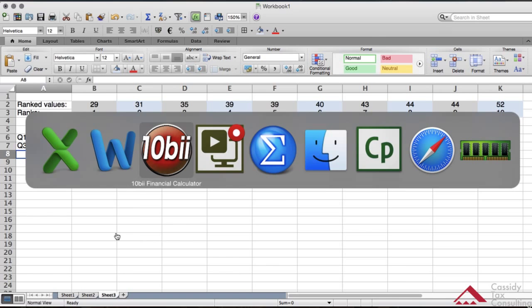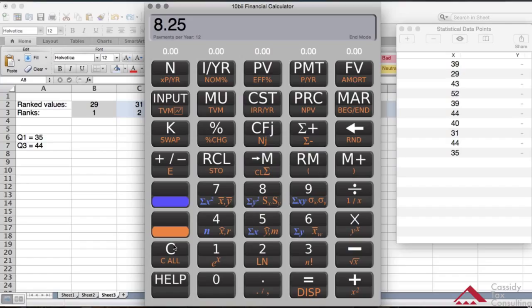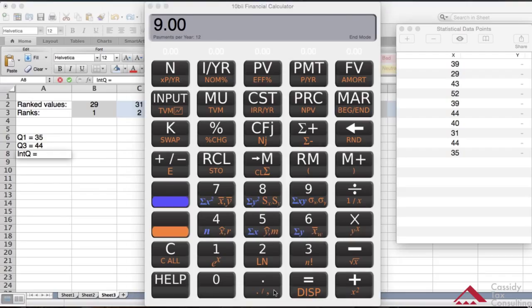We already have those two values. We have the first quartile and the third quartile. The interquartile is the difference. Let's go to the calculator, hit clear. The formula says Q3 minus Q1. Q3's value is 44. So you do 44 minus 35, equals 9.